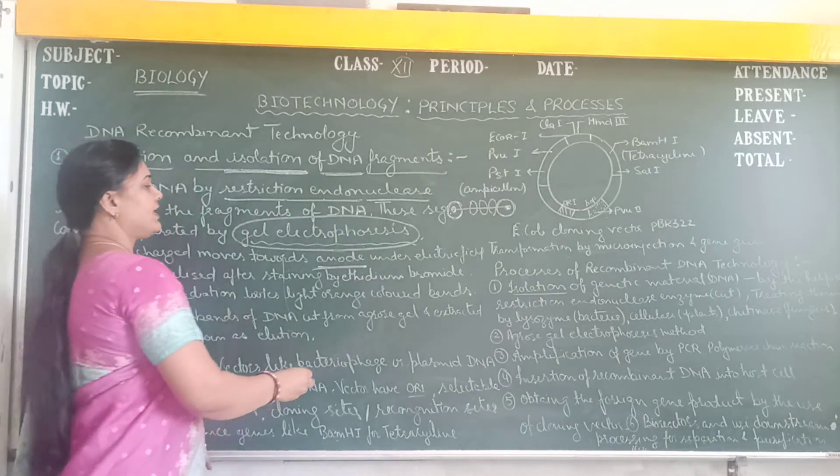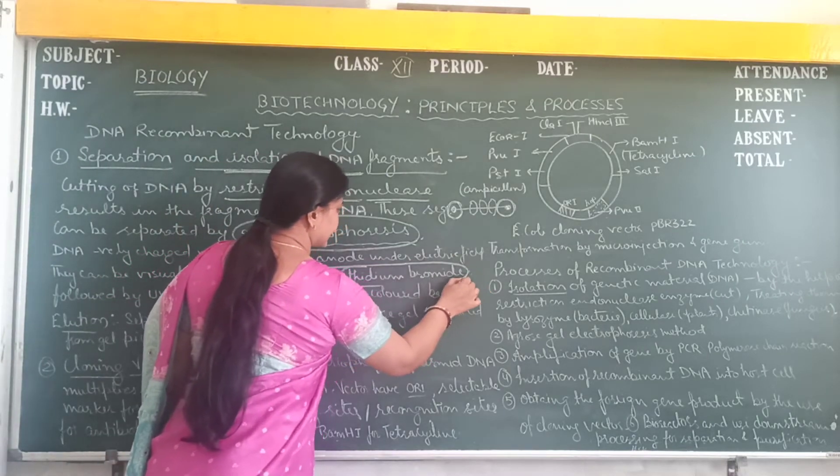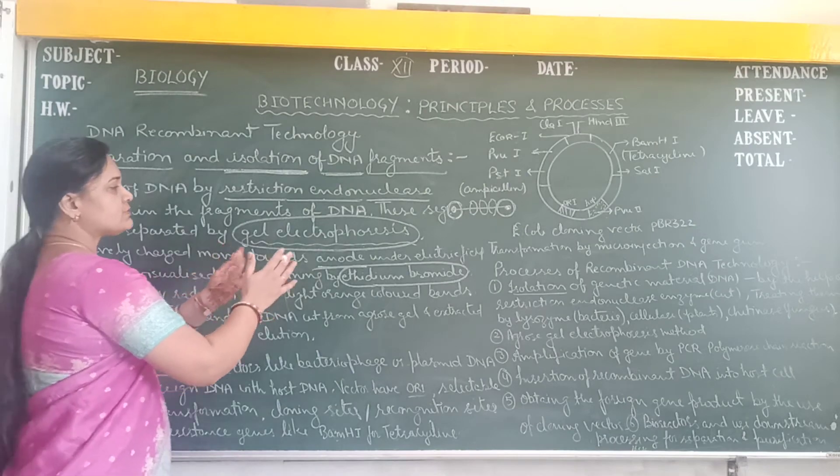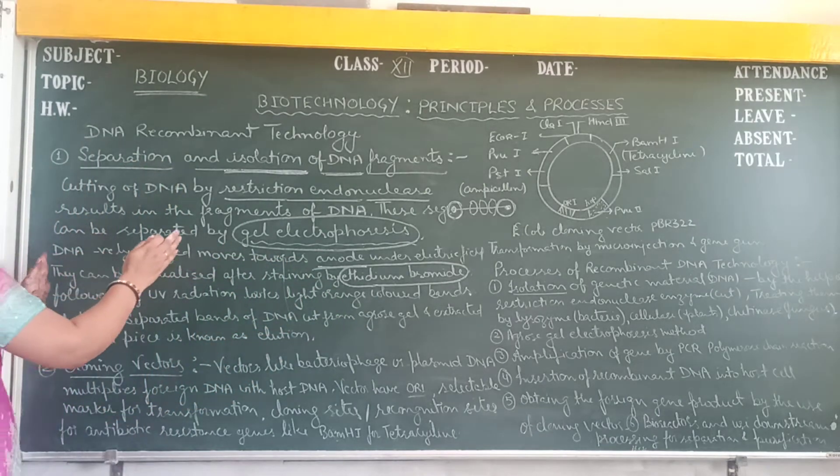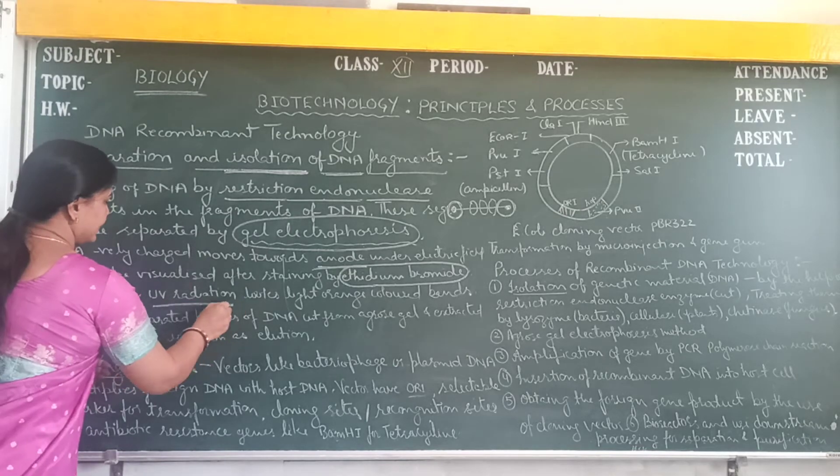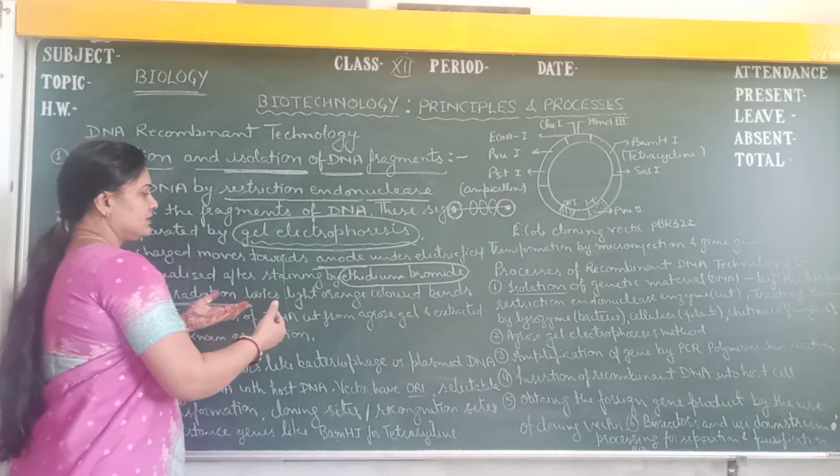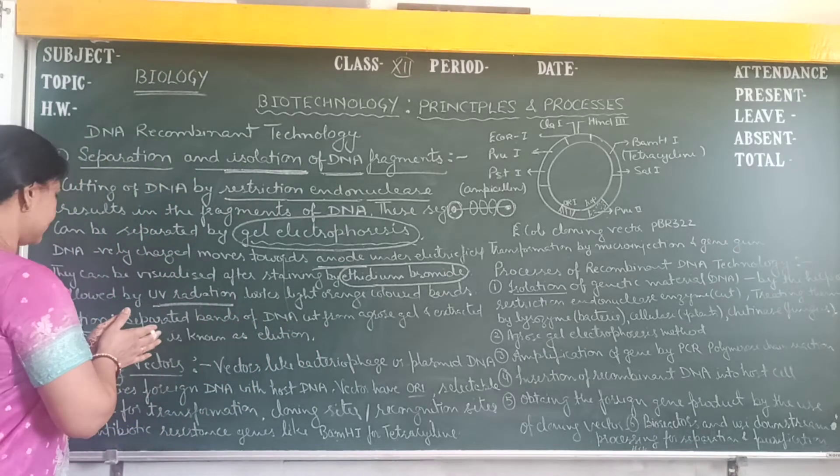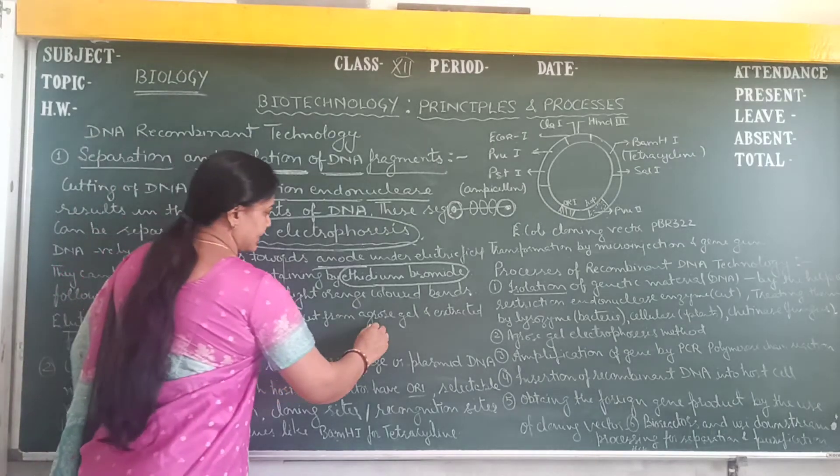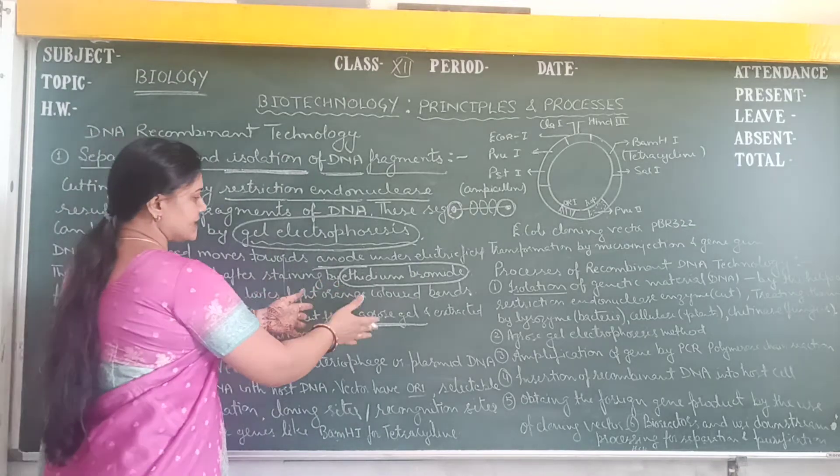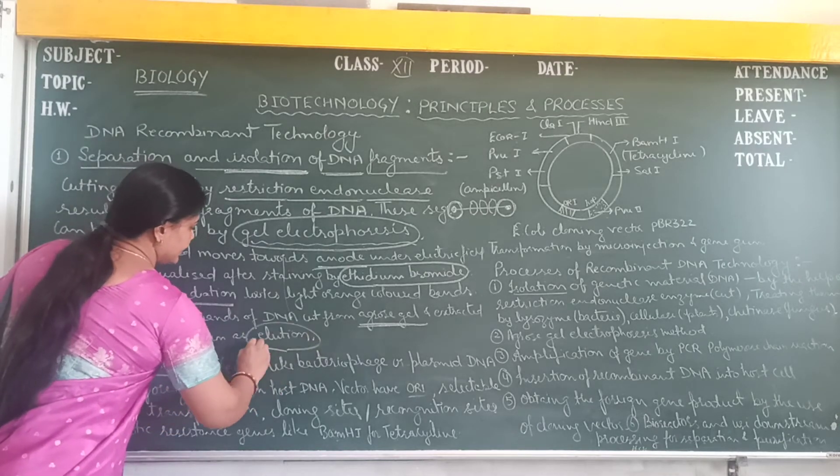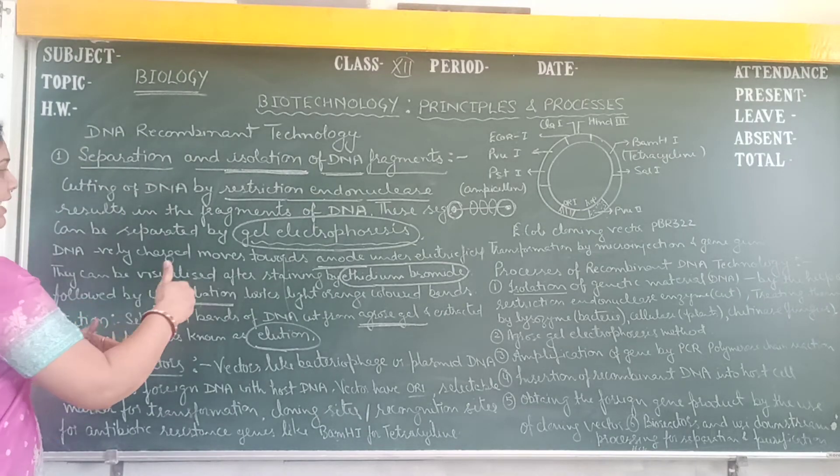They can be visualized after the staining by ethidium bromide. Ethidium bromide is used for the staining of DNA fragments. They are separated according to the small and the larger size. After the staining, ethidium bromide is followed by UV radiations. UV radiations are applied on the DNA fragments and they provide light orange color to the bands, the larger and small bands. What is elution? Elution is the separated bands of DNA cut from the agarose gel. The DNA fragments are cut with the agarose gel, then extracted from the gel base. This process is known as elution, the process of separation of pure DNA from the agarose gel.